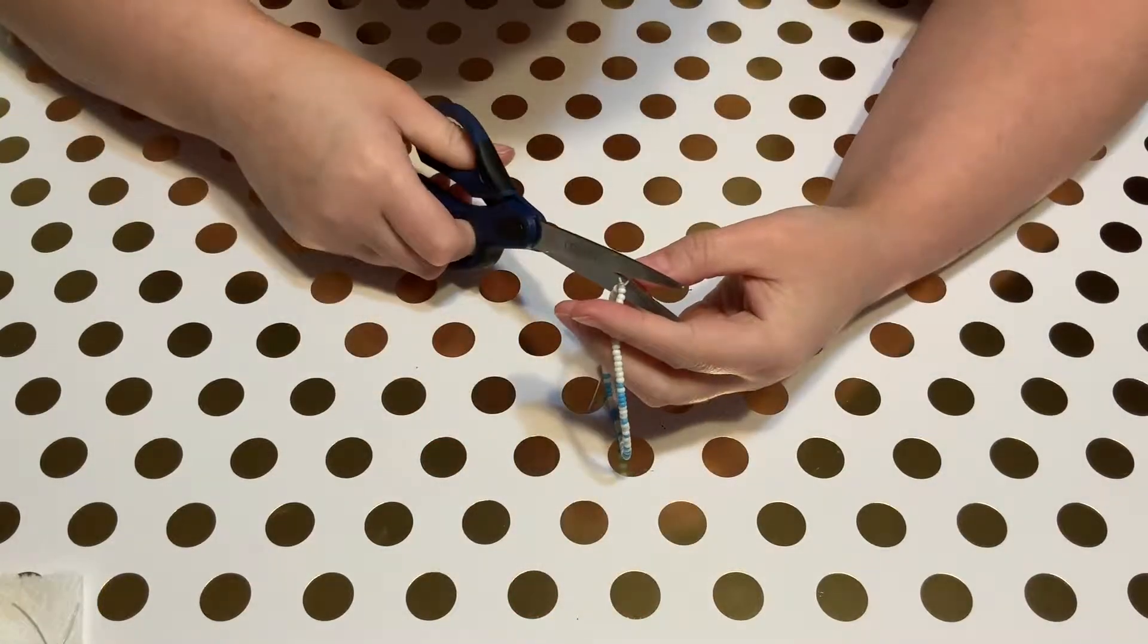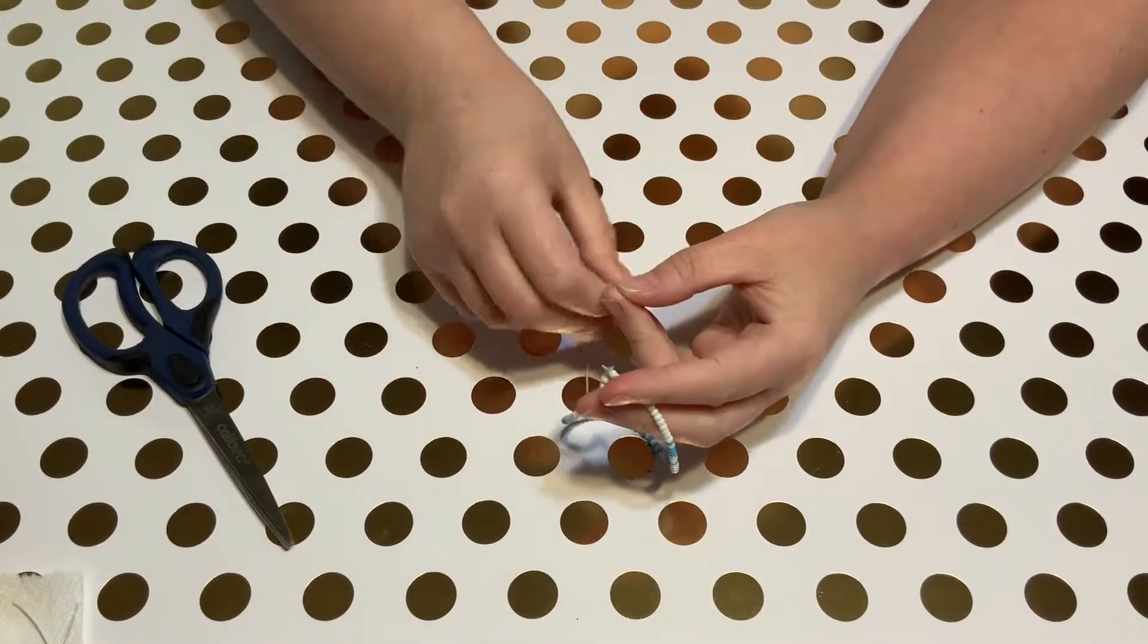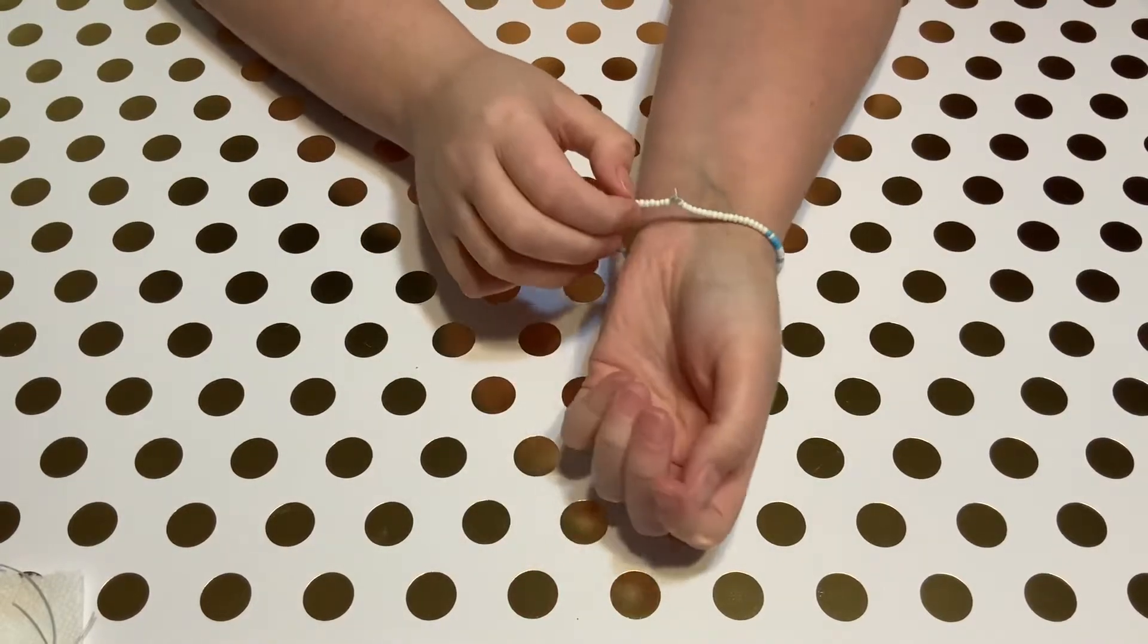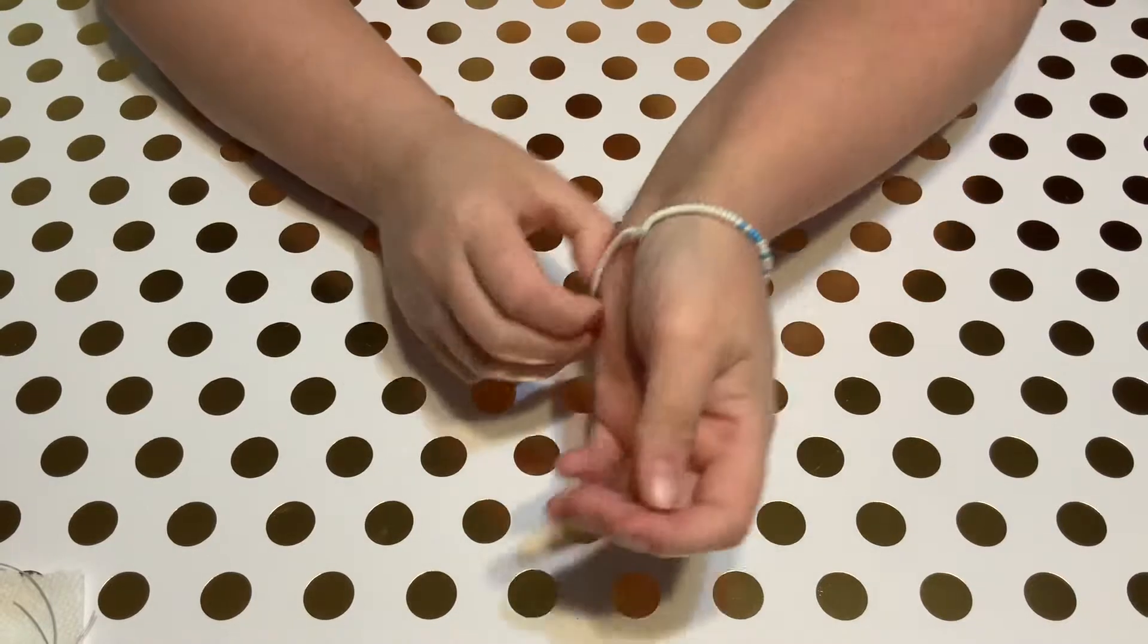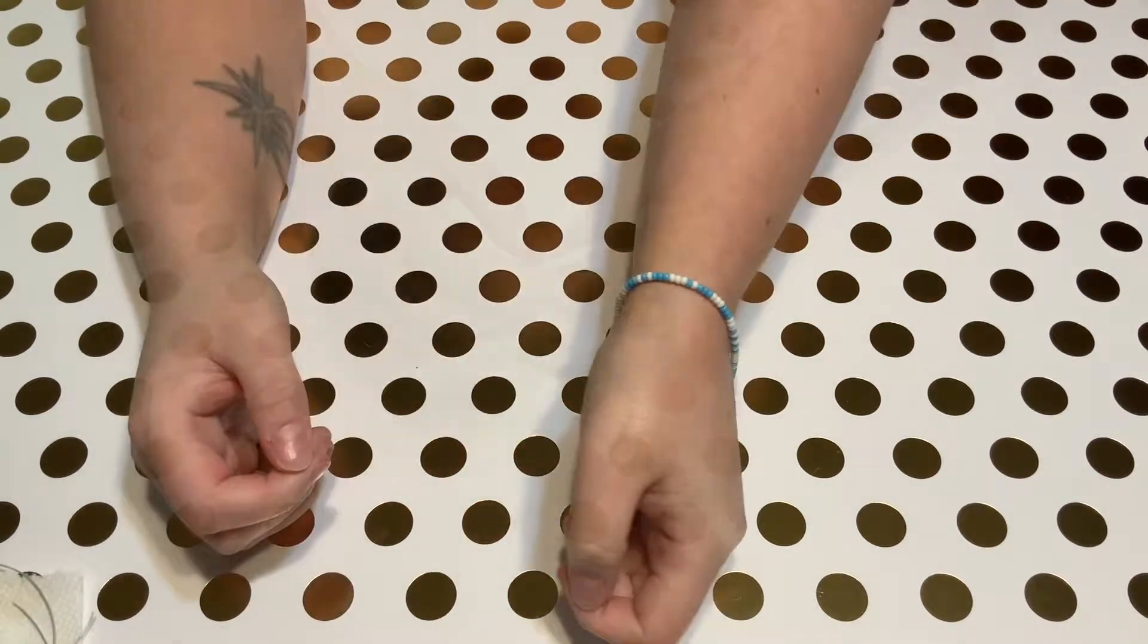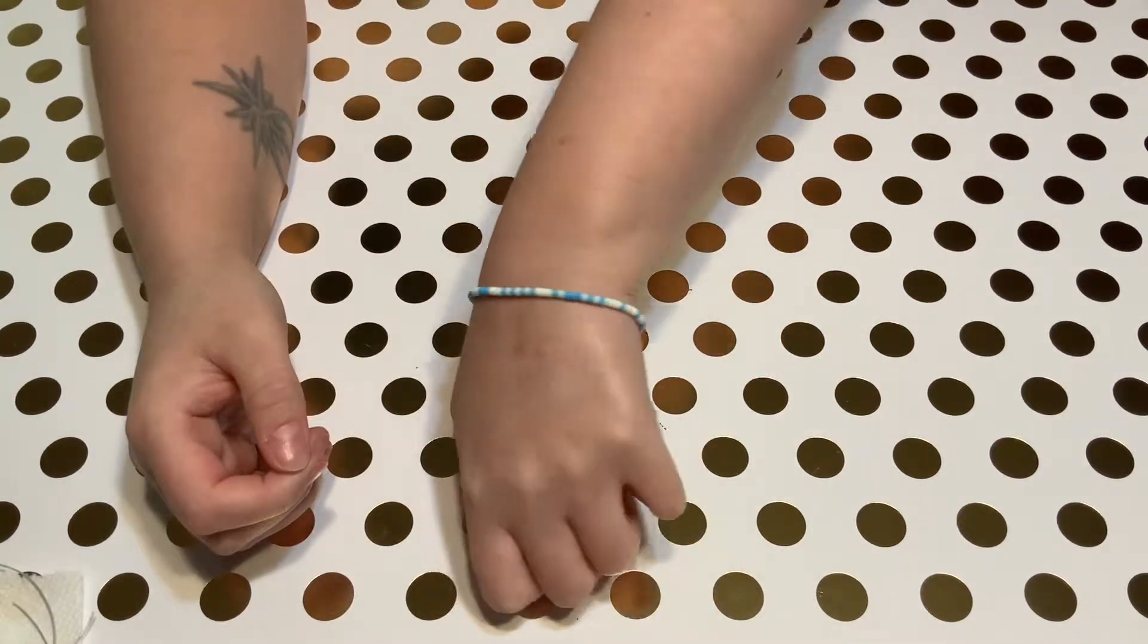I then repeat the final steps for the second bracelet, cutting the string and trying it on. And because I didn't learn my lesson from my first bracelet, I try this one on backward too. And then I'm done. I have two bracelets spelling out mine and my mom's name in Morse code.